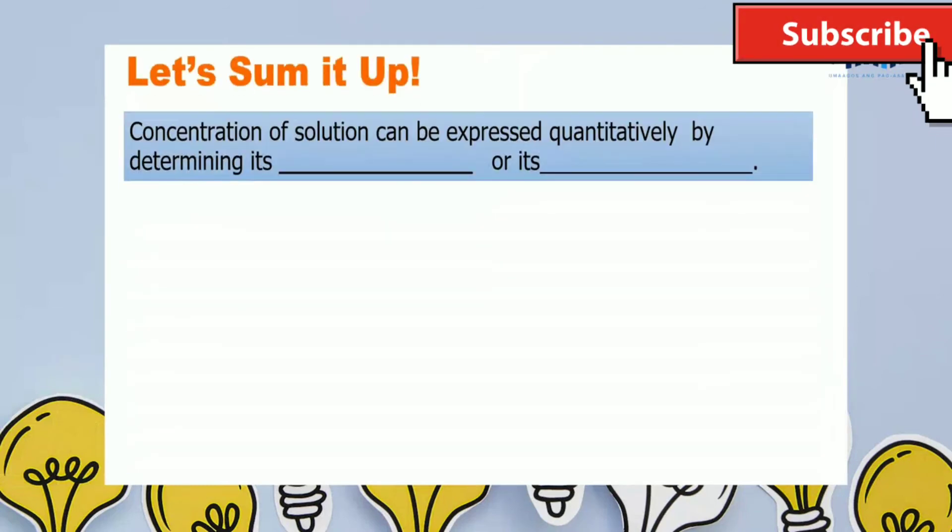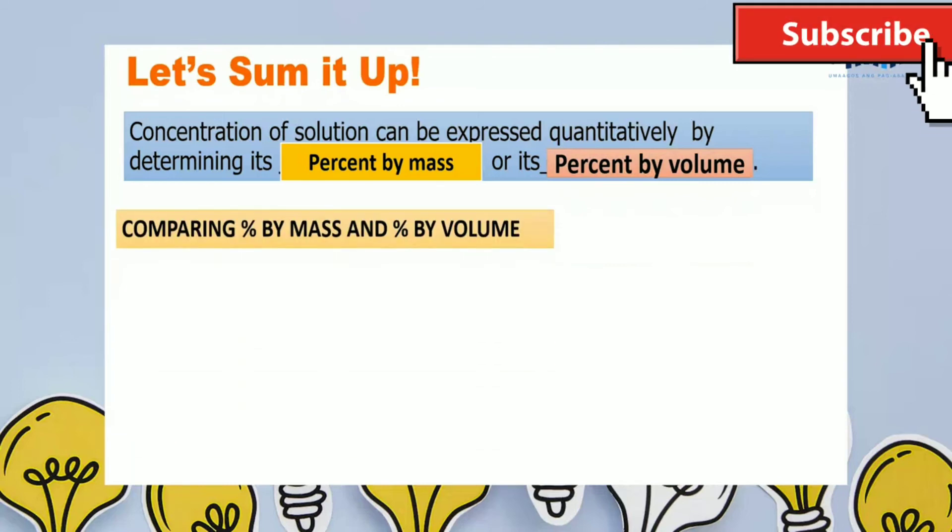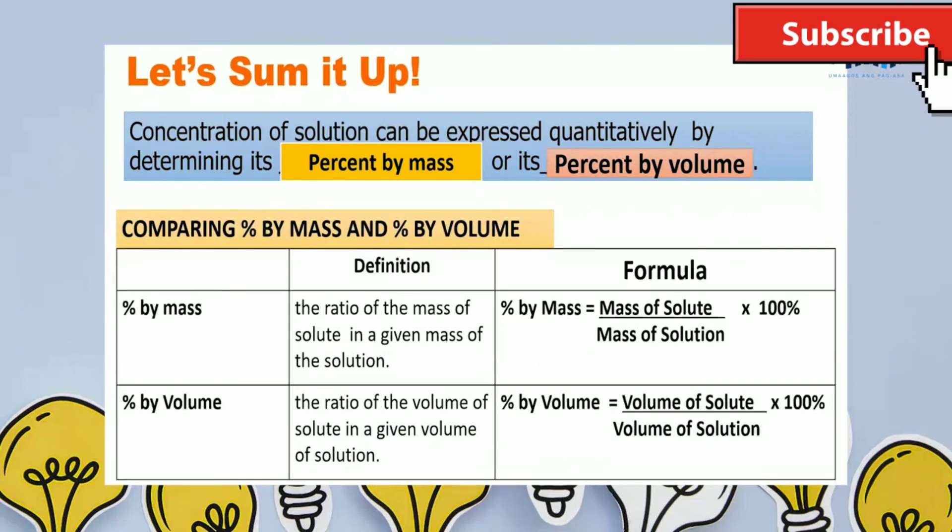Concentration of solution can be expressed quantitatively by determining its percent by mass or its percent by volume. To compare percent by mass and percent by volume, we have here a table wherein percent by mass is the ratio of the mass of solute in a given mass of the solution while that percent by volume is the ratio of the volume of solute in a given volume of solution. For computations and problem solving, we have to use their formulas.